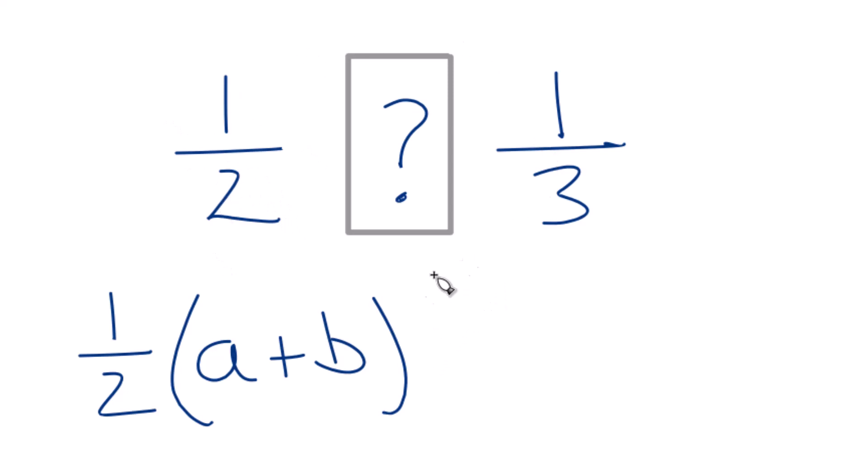We're taking the average. So that gives us 1 half times 1 half plus 1 third. So we need to add these together first. And it looks like we'll need to find some common denominators here for this to work.